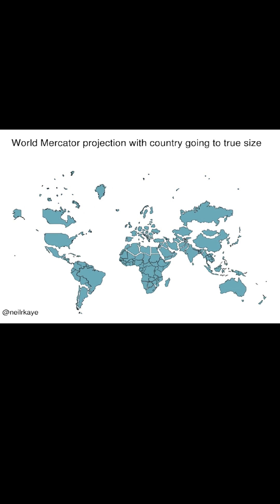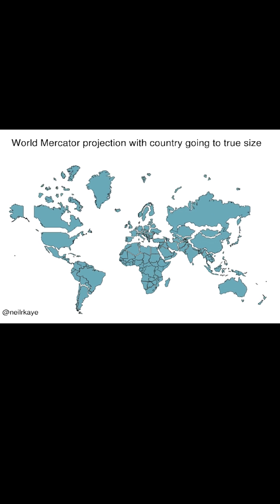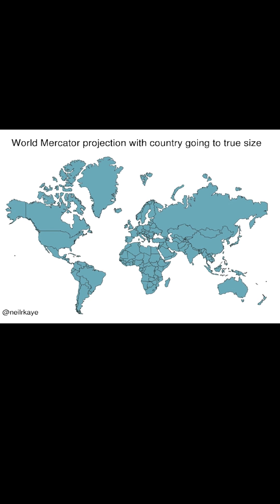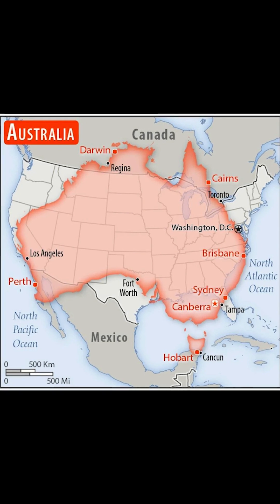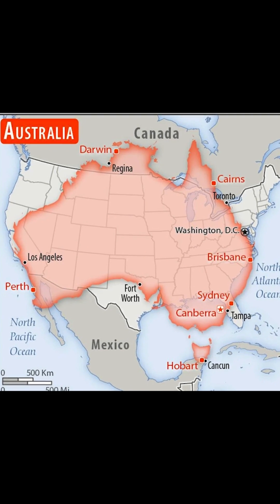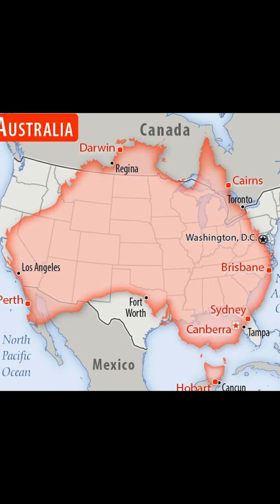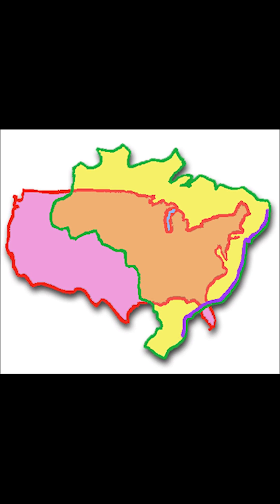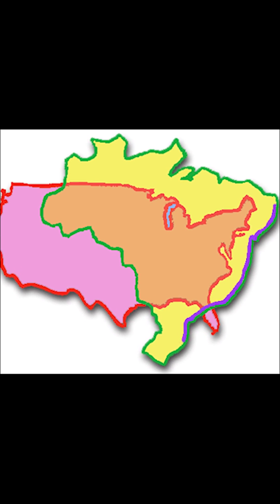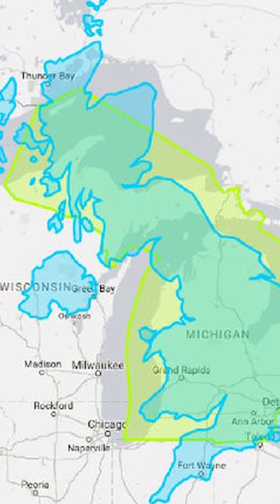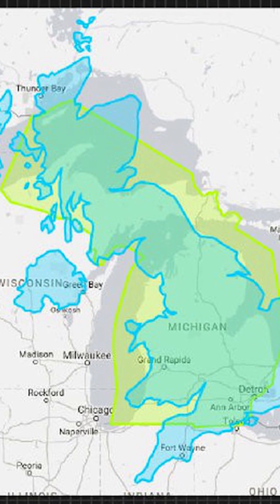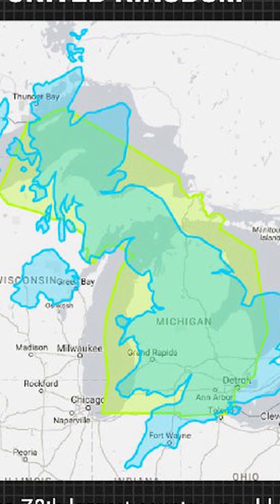A lot of places that look tiny are much bigger, and places that look massive are actually tiny. Australia is actually a similar size to the lower 48 of the US. Brazil is actually bigger than the lower 48. The whole of the UK fits into Michigan.